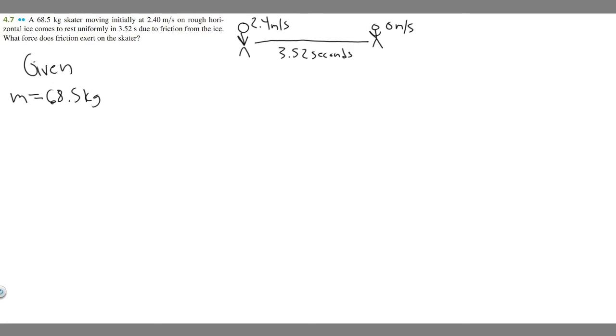We also know the initial velocity or v sub 0 of our skater. They're going to be traveling 2.4 meters per second in the beginning of our interval. So that's going to be the initial velocity. We also know the final velocity because it says they come to rest uniformly. So at the end of the interval, they're going to be traveling 0 meters per second because they're at rest.